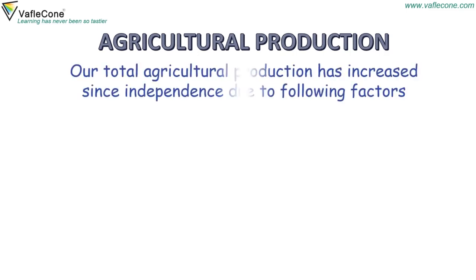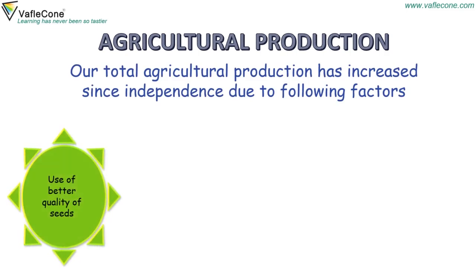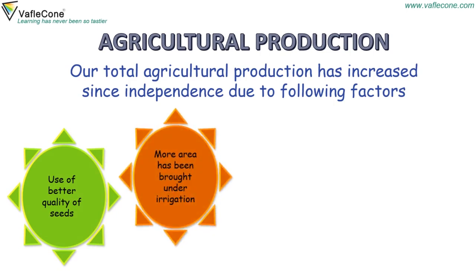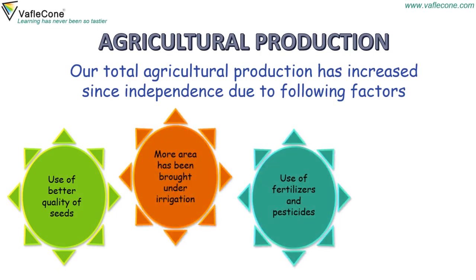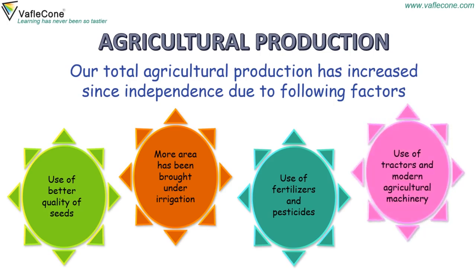Agricultural production: our total agricultural production has increased since independence due to the following factors — use of better quality seeds, more area brought under irrigation, use of fertilizers and pesticides, and use of tractors and modern agricultural machinery.